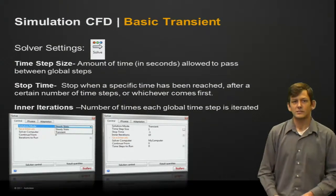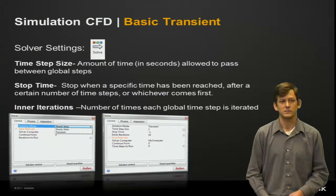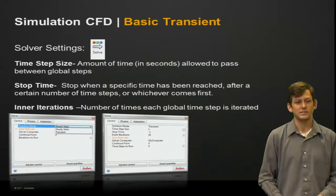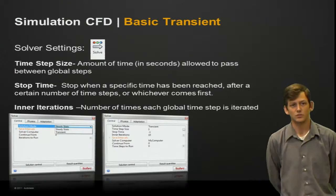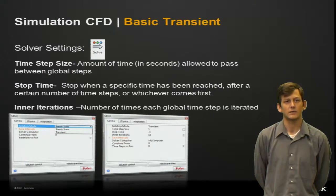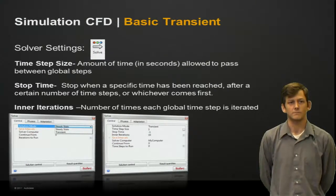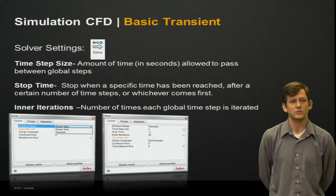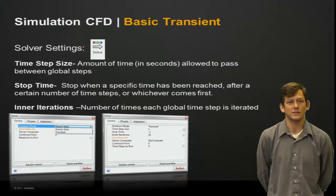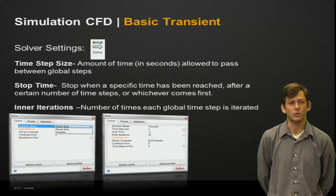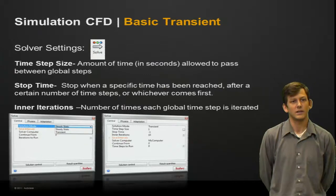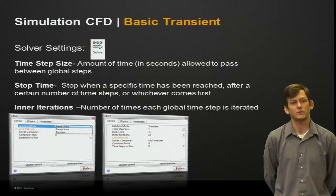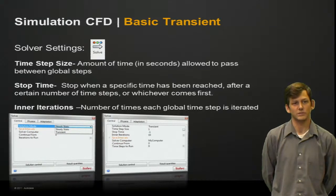Looking at the solver settings, this is one of the more important details with transient analyses. First is the time step size, which allows us to dictate time in seconds between each global step or global iteration. This essentially controls our time accuracy or time fidelity as we evolve through the solution. The stop time isn't used as frequently, but it allows us to specify a time at which we want the analysis to stop. By default, this has a value of negative one to ignore this field, but if populated, whichever comes first between the stop time and the iterations to run will cause the analysis to stop.